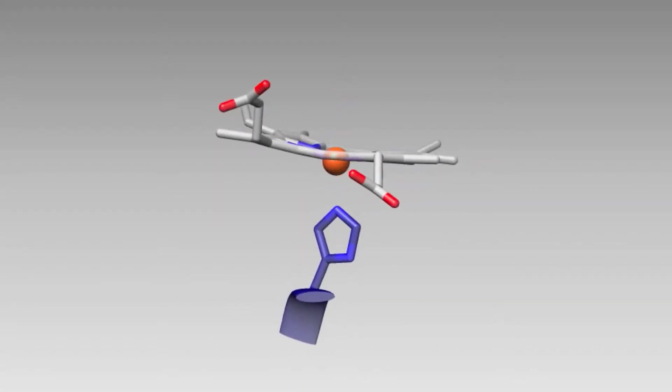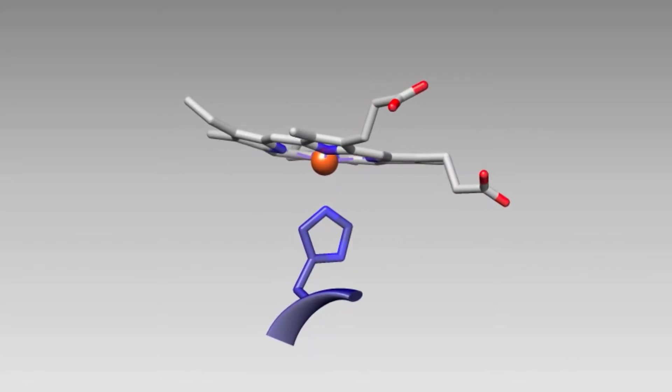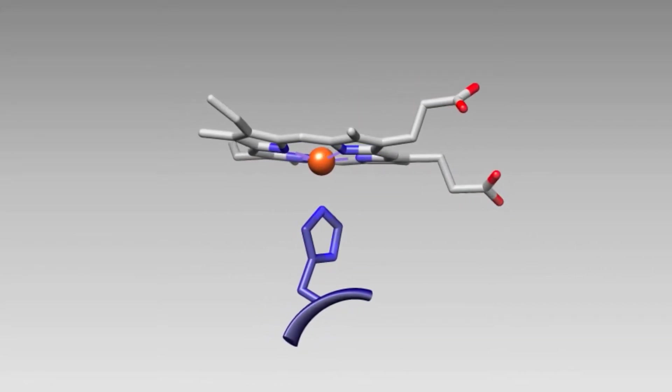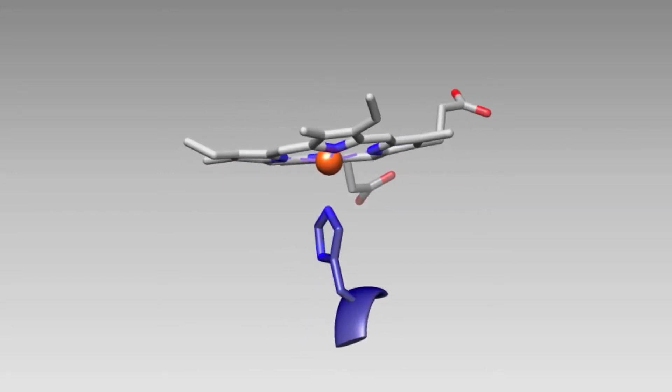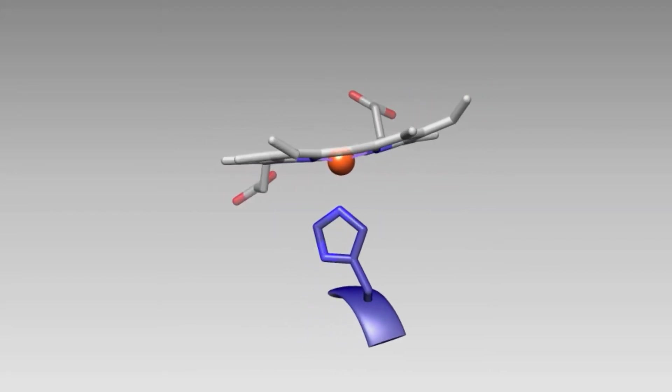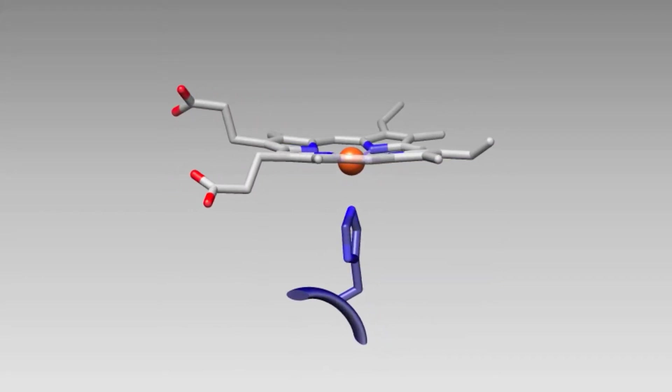When heme is deoxygenated, the iron remains in the 2-plus oxidation state but is five coordinate high spin. The geometry of the system is square pyramidal as it has five ligands. The D to D energy transitions within this system result in the transmission of blue light, explaining why deoxygenated blood is blue.